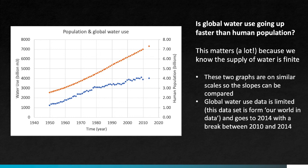Understanding whether or not water use is going up faster than human population tells us whether we're using more water per person or less water per person each year. To answer this question, I made a graph using data from the UN Population Division and the World Bank. The two y-axes here have the same relative scale, 0 to 8 — 8,000 billion cubic meters of water on the left, and 8 billion people on the right.